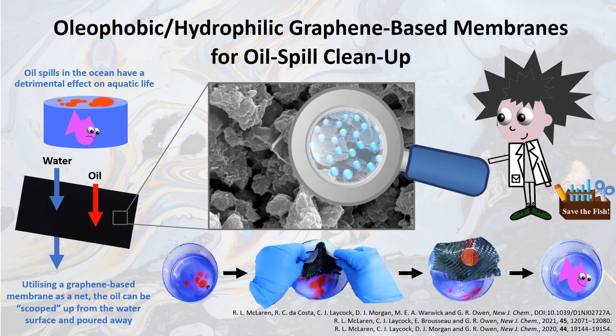We see here that when we coat the membrane upon carbon fibre, it can be used as a net to scoop up oil from the surface of water. As the water runs through the membrane, the oil is left on the surface of the membrane and can be simply poured off and the membrane reused. As such, we now see a happy looking fish swimming in water free of oil.